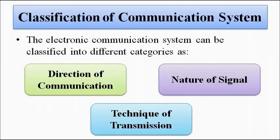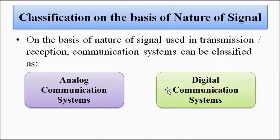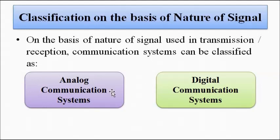Here we have discussed in a simple and short way the classification of communication systems on the basis of nature of signal — that is, analog communication systems and digital communication systems. We will be discussing each of these in detail, as each subcategory is essentially a separate subject in itself. But first it is important to have a good overall idea of what is to be covered.